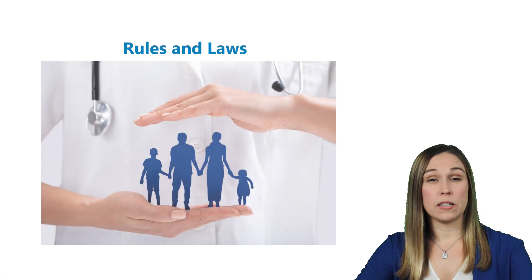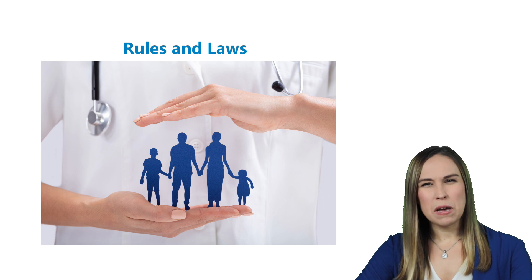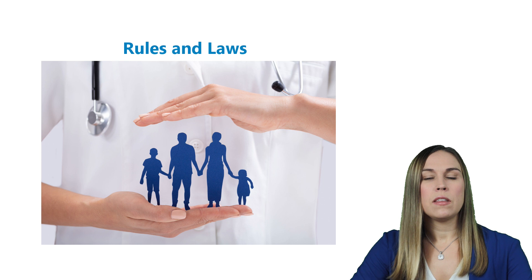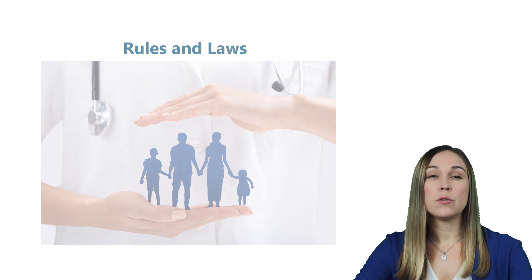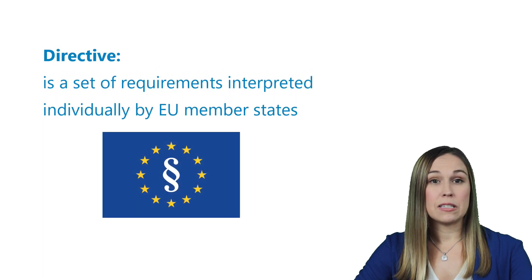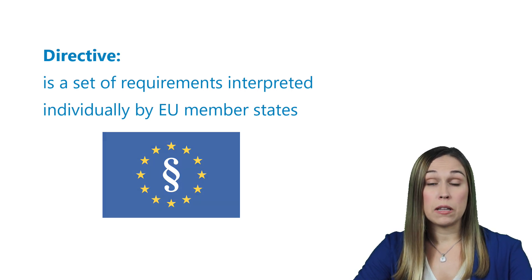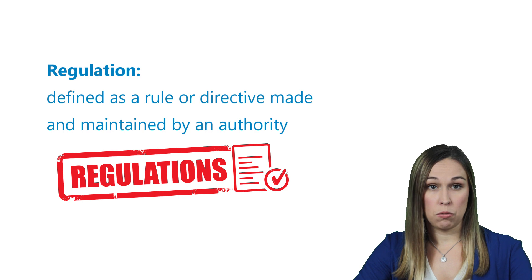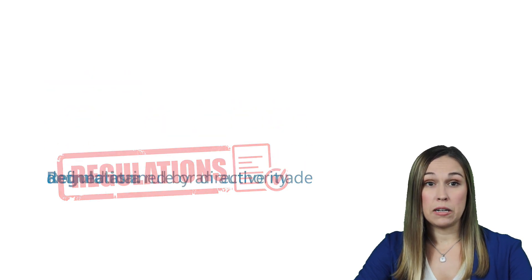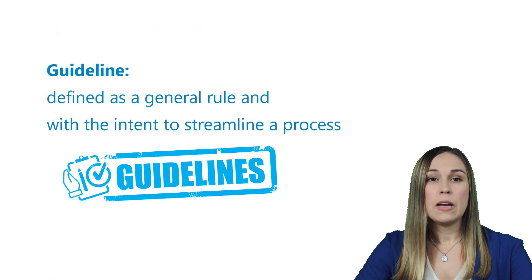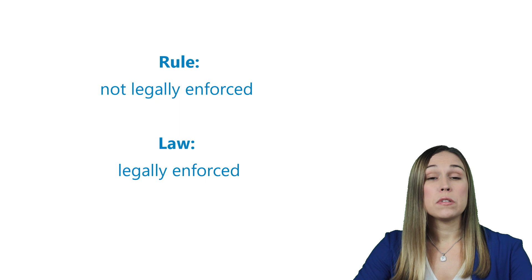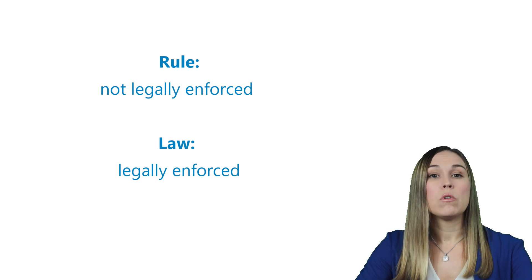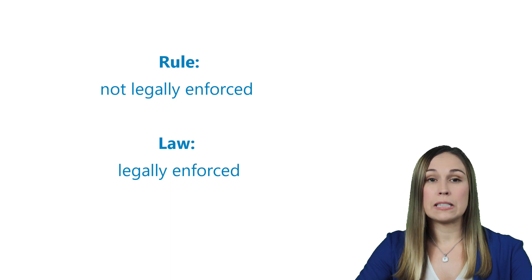When it comes to the rules and laws that govern medical device development, most people want to know: is this medical device safe? Where's the proof? These are fair questions, but before we answer them, it's important to understand a few key points. A directive is a set of requirements interpreted individually by EU member states — these are legally binding and supported by regulations and guidelines. A regulation is defined as a rule or directive made and maintained by an authority; these are not open to interpretation and are legally binding. A guideline is defined as a general rule with the intent to streamline a process, and is not legally binding. For the purposes of this video, we will consider a rule as not legally enforced and a law as legally enforced.